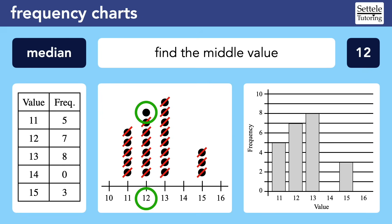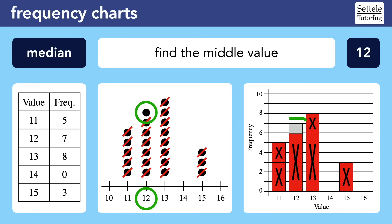Eliminating one at a time can be tedious, so let's use the histogram to shorten the process. I look at the values on the ends and pick the one with the smallest frequency. I eliminate all three 15s at once, then balance by eliminating three of the 11s. Then I remove the remaining two 11s and cross off two of the 13s. Seeing more 12s remaining than 13s, I cross off all six 13s and six 12s. I'm left with just one 12, which is the median. A very similar process works on the frequency chart itself.